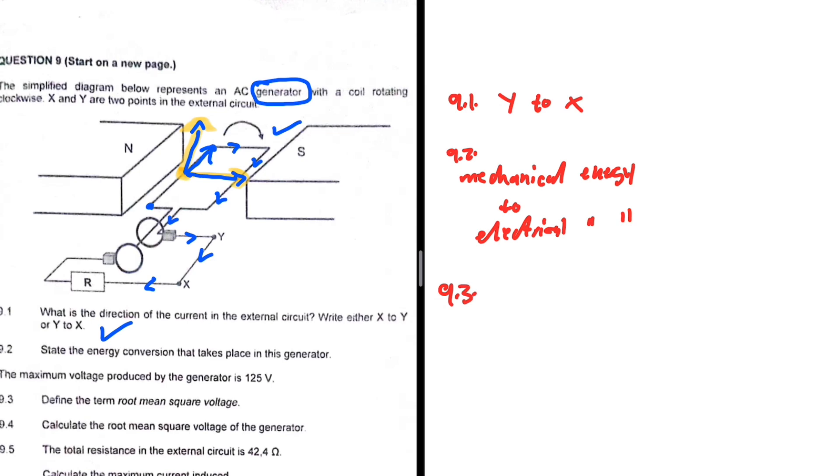Then in 9.3, the maximum voltage produced by the generator is 125 volts. The question: determine the root mean square voltage. Well, this is a definition that most people get wrong because it is often overlooked. People don't really practice this definition. I wonder if you actually know this definition. Can you just state it for me in the comment section? A lot of people think that they know these definitions but they don't.